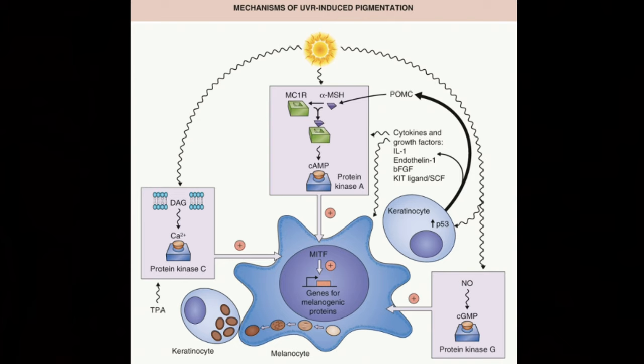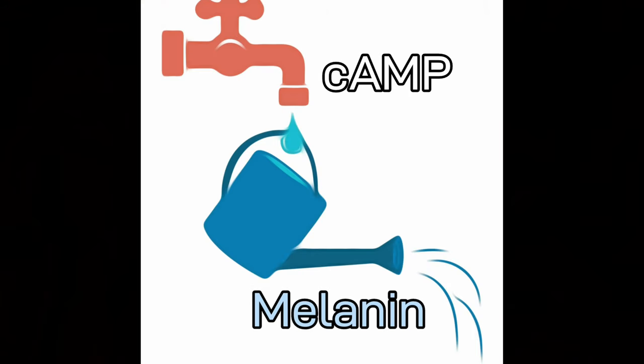MITF is responsible for the synthesis of tyrosinase, tyrosinase-related peptide 1, and protein kinase C beta — all enzymes needed for melanin synthesis. Physiologically, melanocyte-stimulating hormone and ACTH attach to the melanocortin receptor on the melanocyte, increasing cyclic AMP levels, which activate MITF, leading to tyrosinase and enzyme production. When cyclic AMP is continuously elevated, as in McCune-Albright syndrome, there is excess pigment production leading to multiple café-au-lait macules.